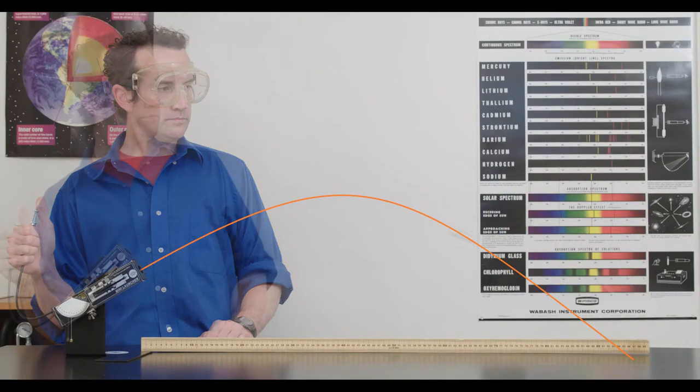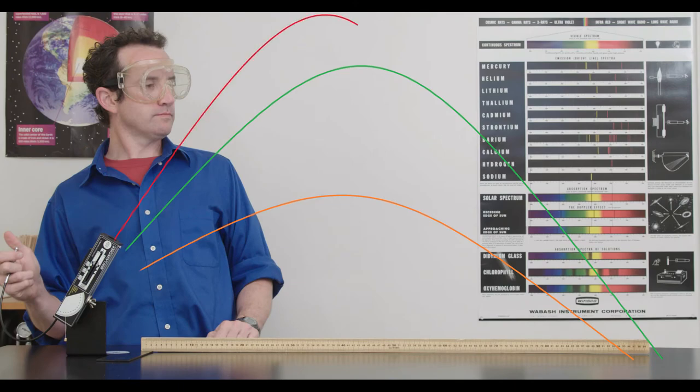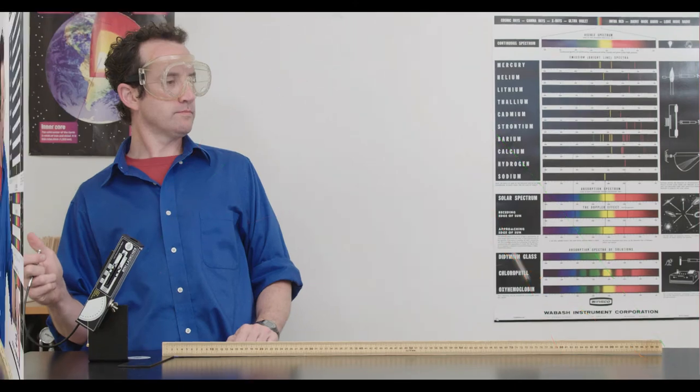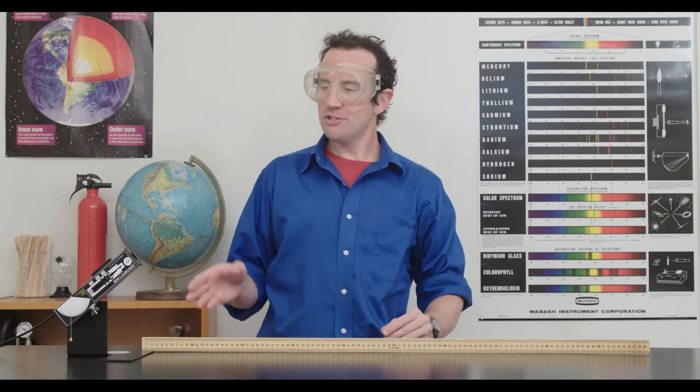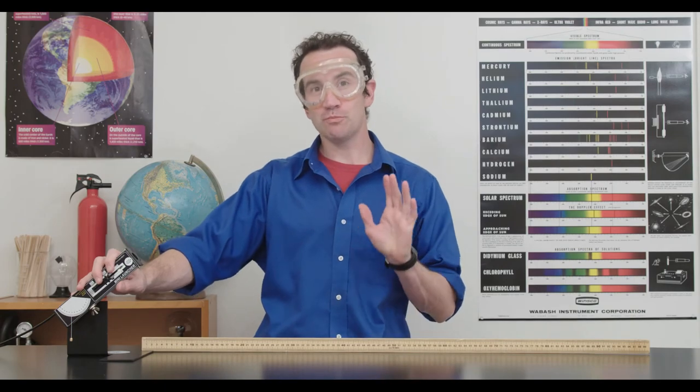But changing the angle changes the range and students can discover which angle gives the best range. The mini projectile launcher is a good choice for teaching projectile motion. It fits right on your lab tables and gives superb data.